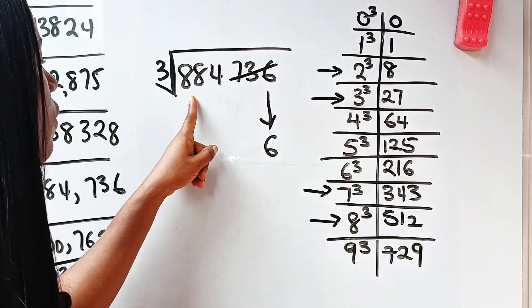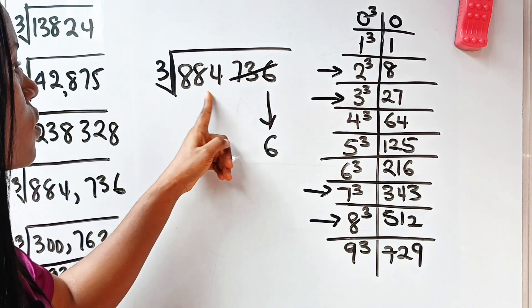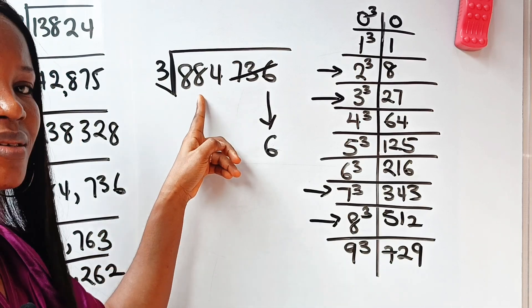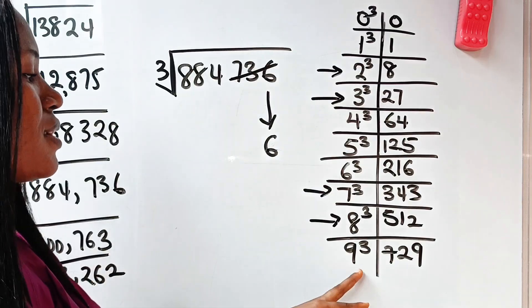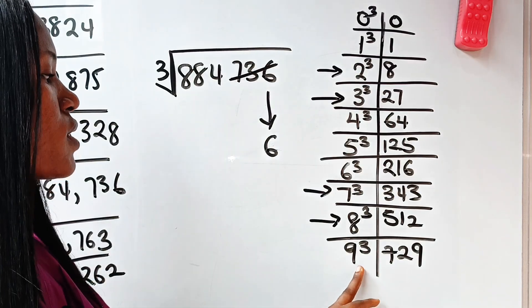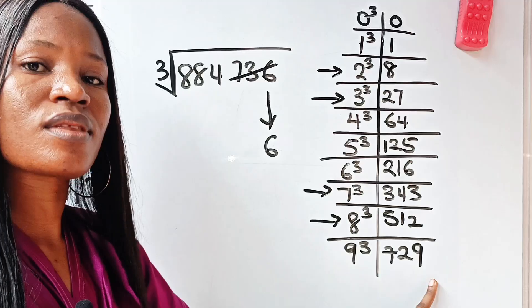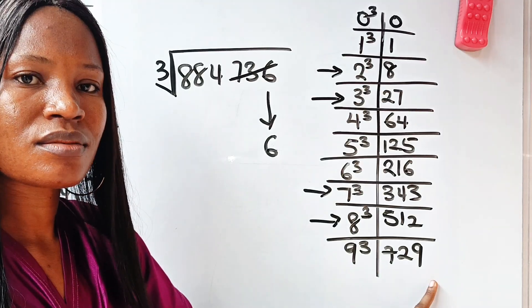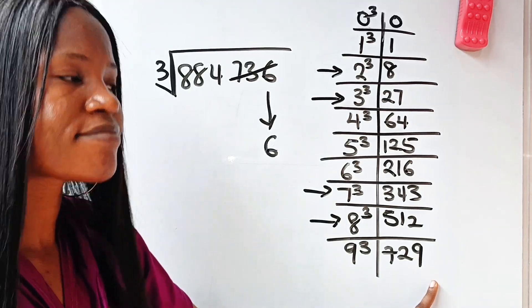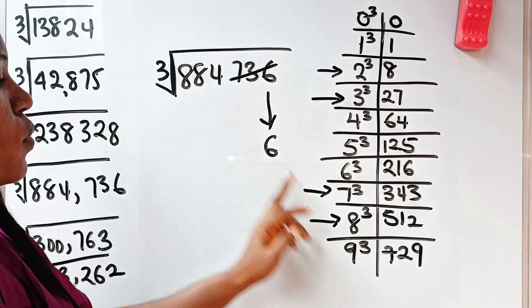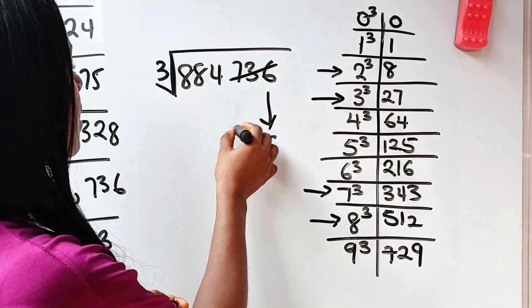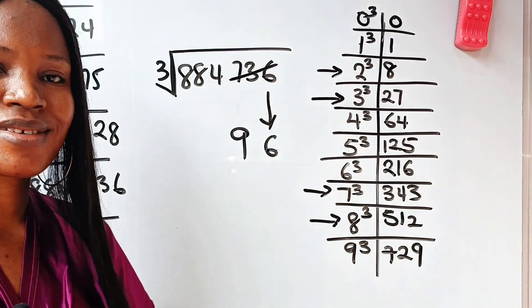Now, what number cubed will give us a number that is close to this, but not more than this? And that number is 9. Yes. Because 9 cubed will give us 729. If we go to 10 cubed, 10 cubed is 1,000. So it's not possible. Right? So this should be what? 9. That means that our answer is 96. Okay.